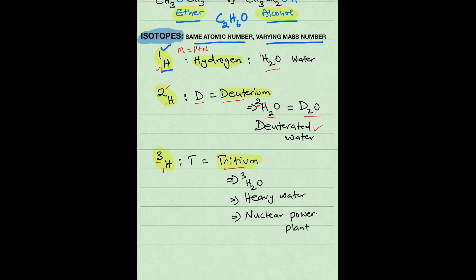And an example of that will be heavy water because the mass of hydrogen is 3, and this is used in nuclear power plants. Thank you very much.